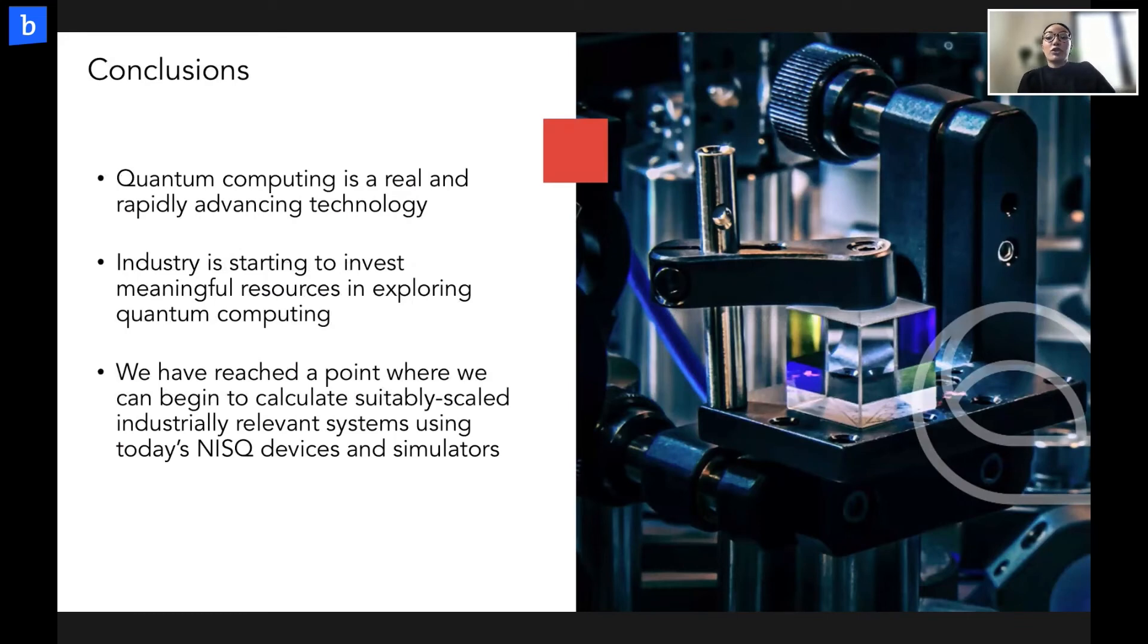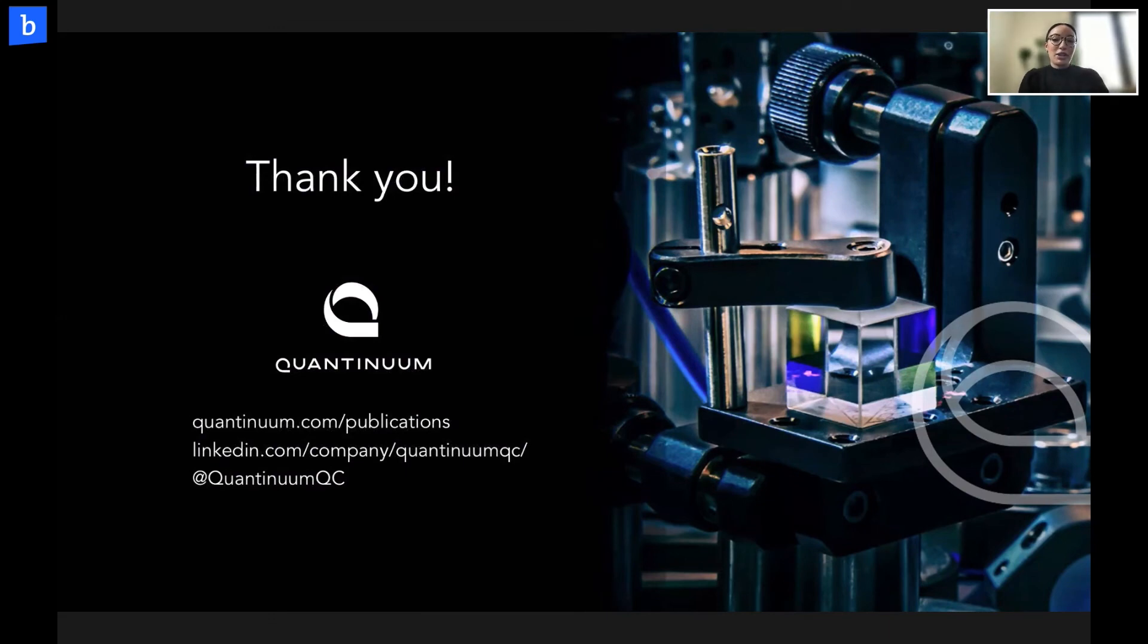So to conclude, what I've tried to put across in this talk is that firstly, quantum computing is rapidly advancing, and this is really mirrored in terms of the levels of investment and engagement we're seeing from industry in exploring quantum computing in this space. I've tried to show how we can approach tackling one of these problems with an industrial partner, and importantly, in terms of chemistry, show that we've reached a point where we can begin to study industrially relevant systems and get accurate results using suitably scaled models on today's devices and simulators. And all of these problems should be phased in a way that they can be scaled up in the future with the advancement of technology. And so that concludes my talk, all of the publications referenced can be found here, and thank you all for listening, I'd be happy to take any questions.